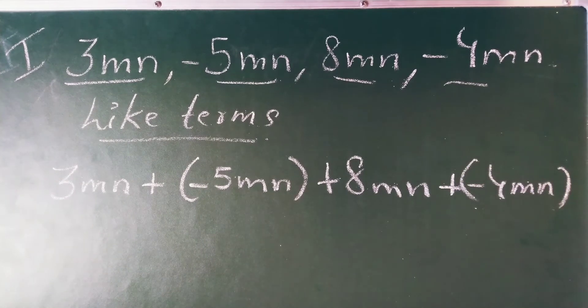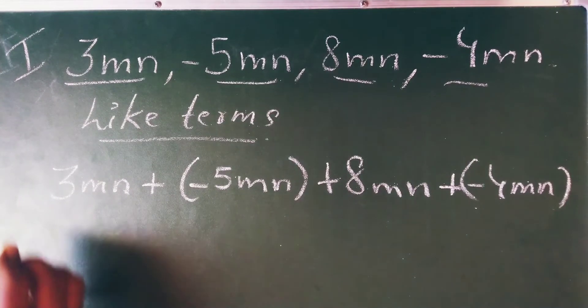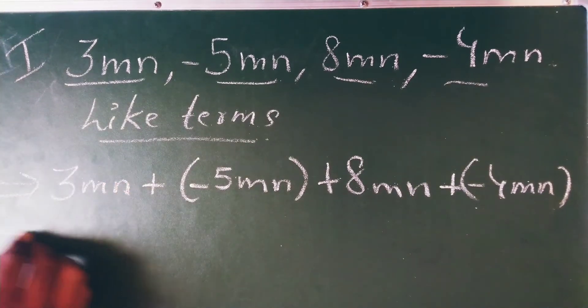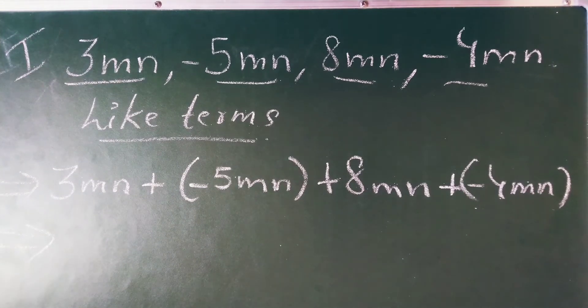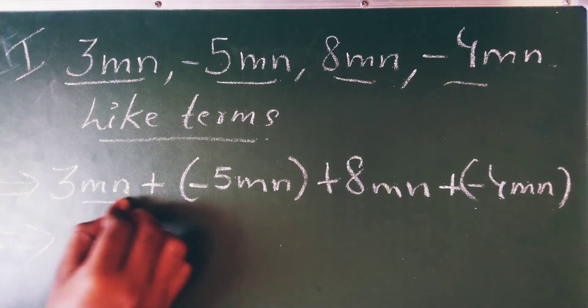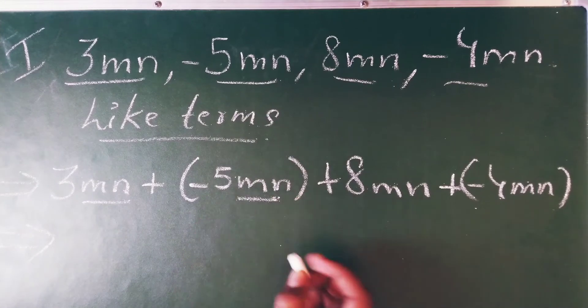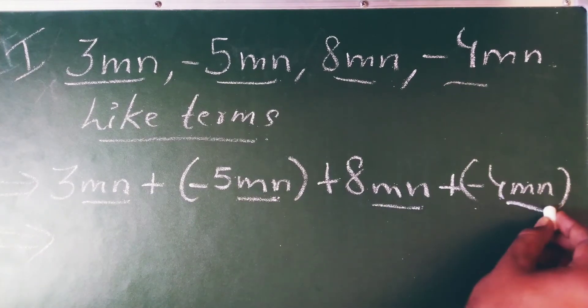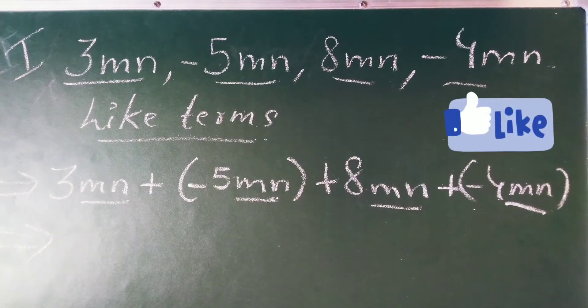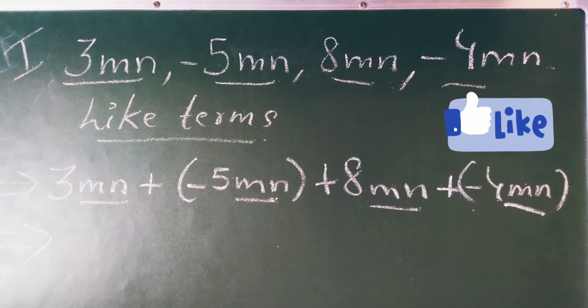Second step is you have to just add. See over here, you have to see only the like terms. All are having the same terms, that means they are like terms. See we got the like terms.